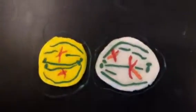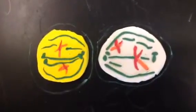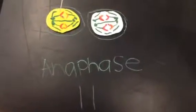During metaphase two, chromosomes line up in the center of each cell. As the cell enters anaphase, the paired chromatids separate.